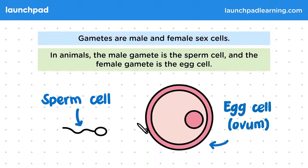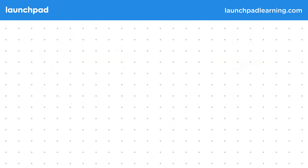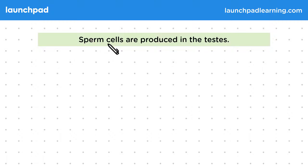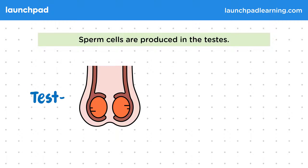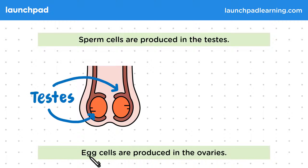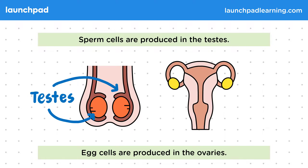These are the gametes, but where in the body are they produced? Sperm cells are produced in the testes — this diagram represents the testes. Egg cells are produced in the ovaries, which are shown by the yellow circles in this diagram of the female reproductive system.